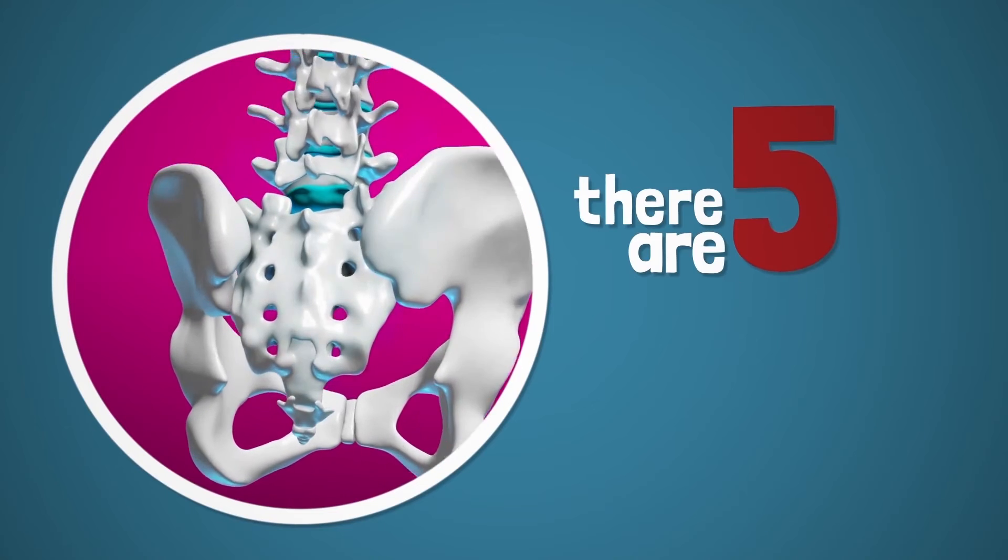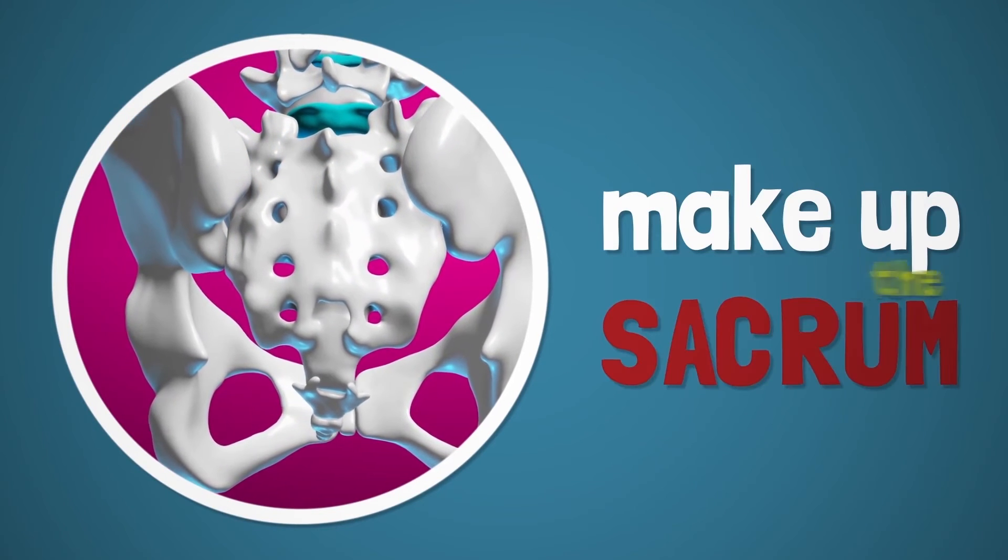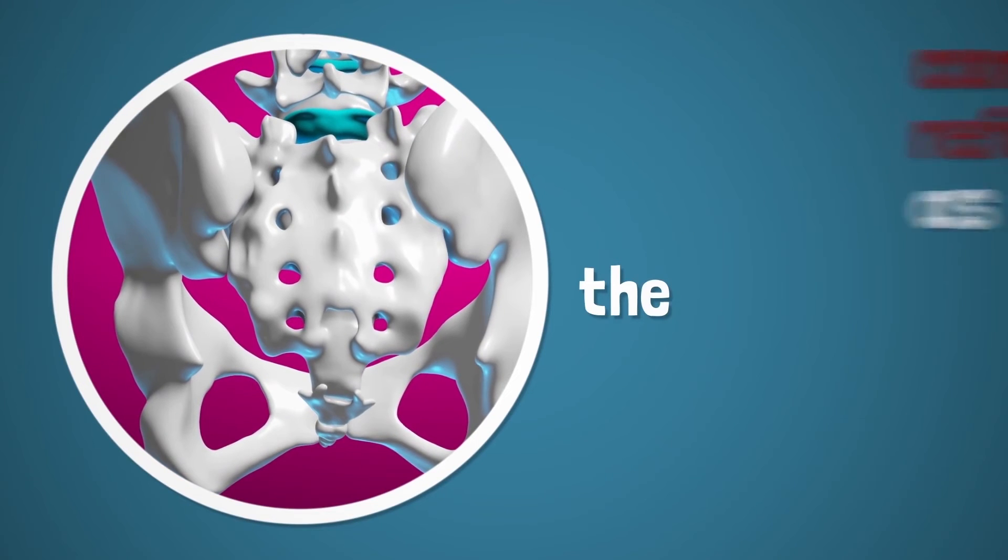In addition, there are five fused vertebrae below the lumbar spine that make up the sacrum, commonly referred to as the tailbone.